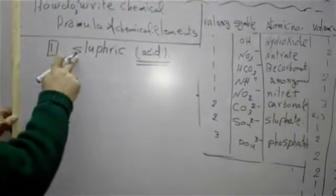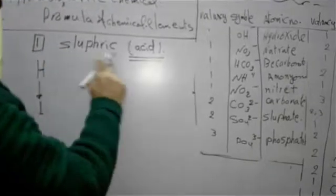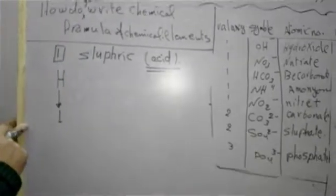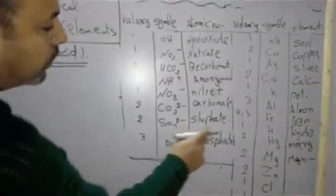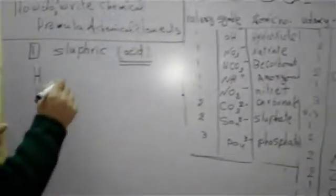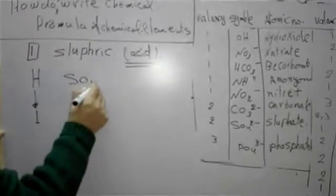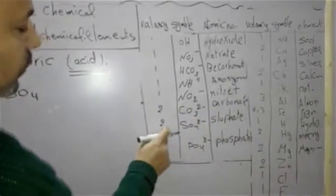After that, you must write sulfuric with sulfate group. Sulfate group is SO4, its balancing is 2.